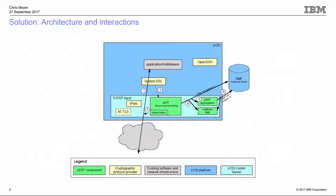Here's a quick architectural overview. In step one, an application or middleware running on z/OS uses System SSL to protect a TCP connection. As soon as the connection is established, the stack starts observing traffic byte-for-byte looking for a TLS/SSL or SSH handshake. If it sees a handshake, it records the attributes, then stops observation once it's confident the handshake completed successfully.